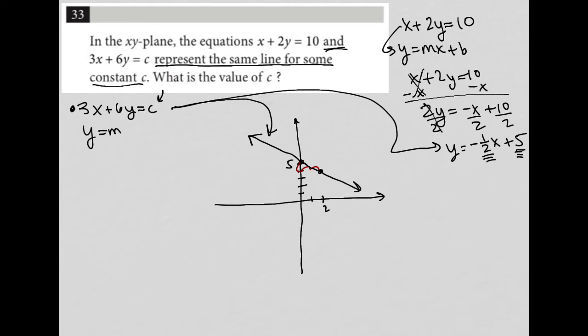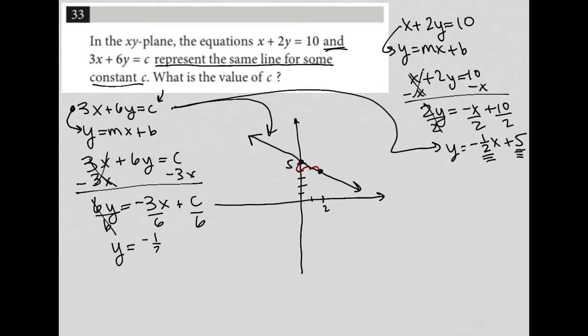Remember, slope-intercept form is y equals mx plus b. So I'm just converting this 3x plus 6y equals c into y equals mx plus b format. I'm going to rewrite the 3x plus 6y equals c, subtract 3x from both sides. I'm left with 6y equals negative 3x plus c. I can then divide everything by 6. And what I'm left with here is y equals, now negative 3 over 6 reduces to negative 1 half x, and then I have plus c over 6.